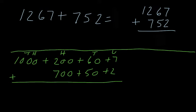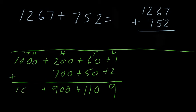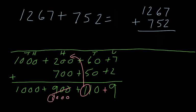So let's get to it. Seven plus two is nine. Sixty plus fifty is going to be a hundred and ten. Two hundred plus seven hundred is nine hundred, and the thousand just comes straight down. We go back and look at the 110 — that set of a hundred needs to be added to the hundreds column, turning our nine hundred into one thousand. That set of a thousand goes to the thousands column, making it not one thousand but two thousand.